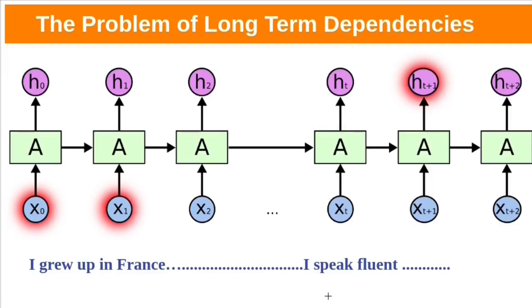Let's take another example. Try to predict the last word in this sentence. I grew up in France and also we have some more information then I speak fluent. RNN need to predict the next word.